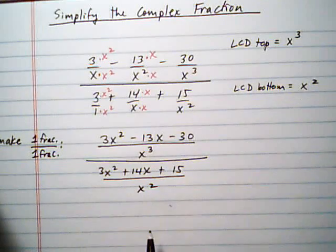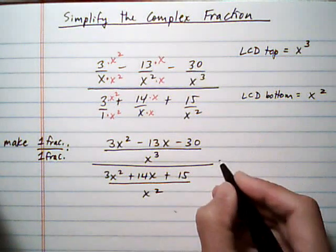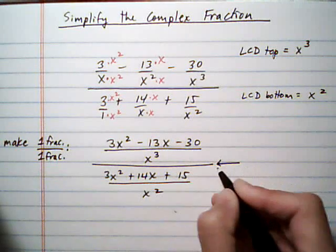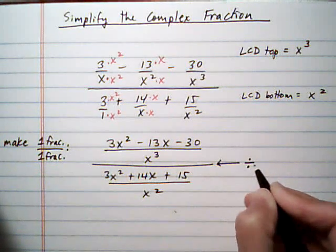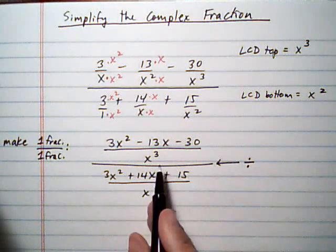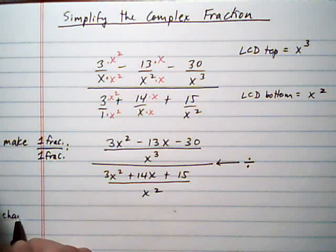So that's the first step. Make sure you have one fraction being divided by another fraction. And the key to this process is that this fraction bar separating the two fractions really means division. You're dividing the top by the bottom. So what we're going to do is change divide to multiply.